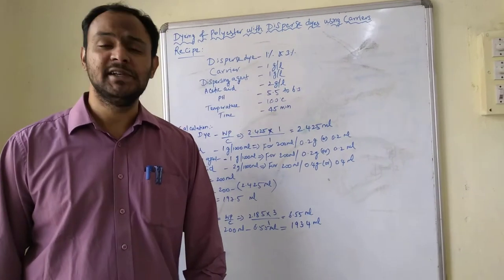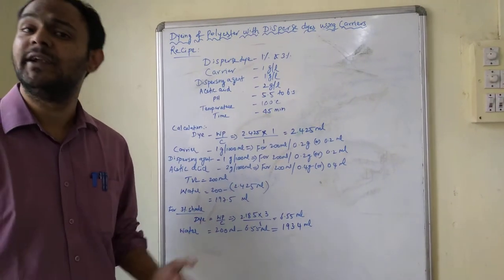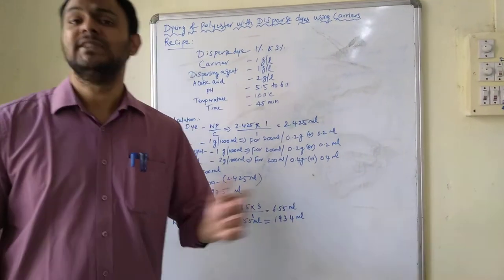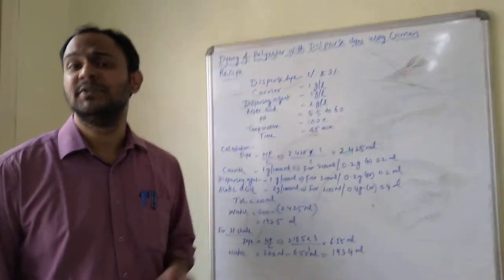Another method is the HTHP machine which we have already seen where the regular dyeing is carried out at 130 degrees centigrade without using carriers. Another method is the carrier method which we are going to see today.